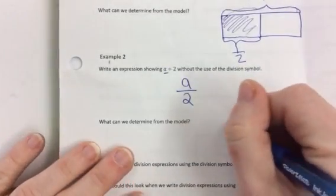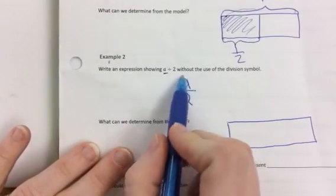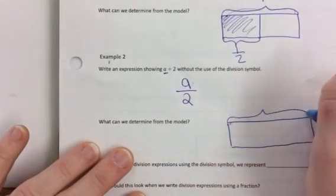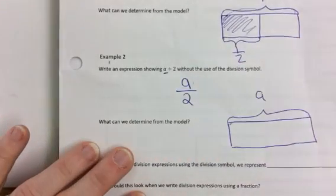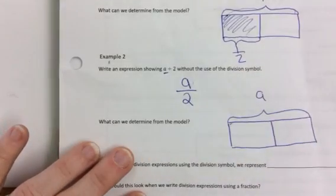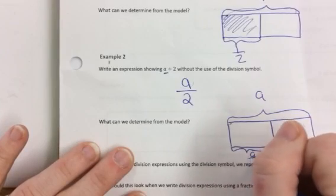As a model, what's your dividend in this case? Your dividend is always going to be your numerator, and in this case it's a. So this would be a divided by 2, so that means we're going to divide it into 2 equal parts. So your solution would be a divided by 2.